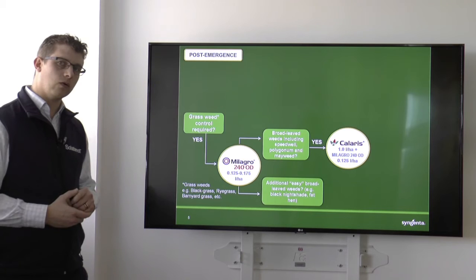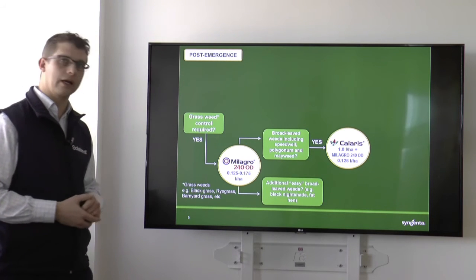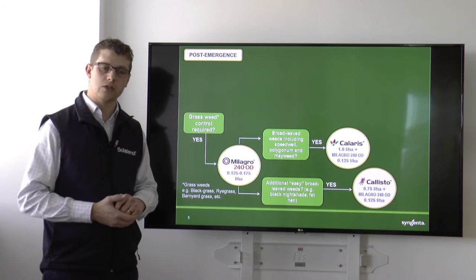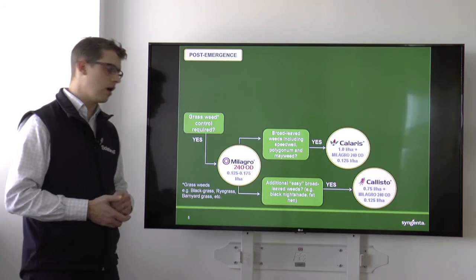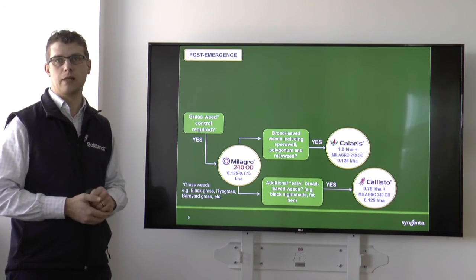If we're only looking for additional easy-to-kill broadleaf weeds, so things like black nightshade or fat hen, then perhaps we could go with our straight mesotrione product in Callisto at 0.75 litres a hectare. Again, not forgetting that Milagro.